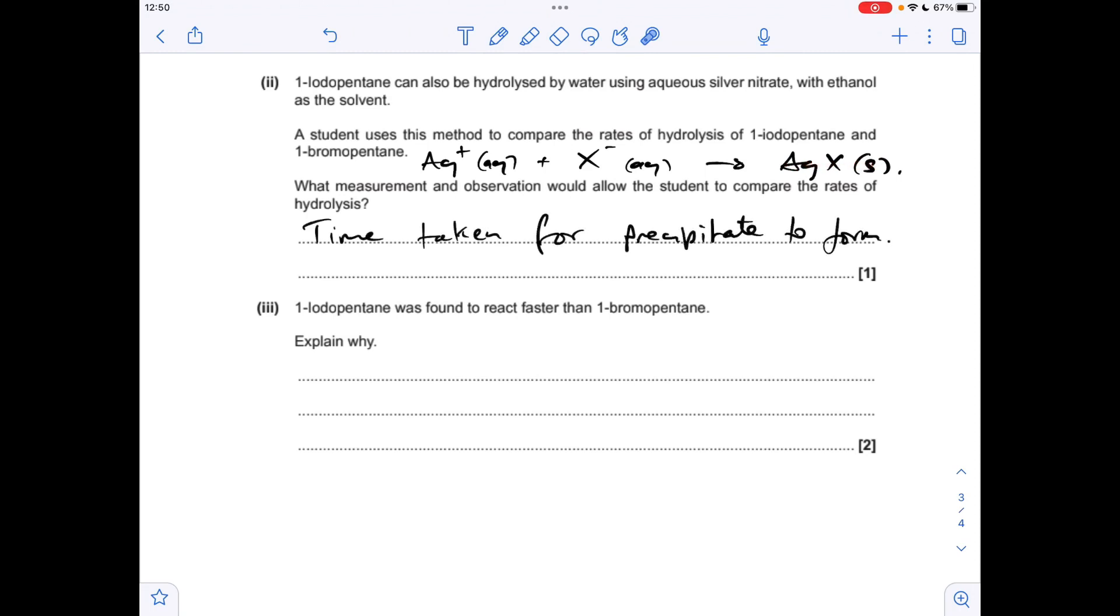So to compare the relative rates of hydrolysis, you'd measure the time taken for the precipitate to form. And the next part is all down to the relative bond strength of the carbon-halogen bond. So CI bond is weaker than the CBr bond, or you could say it has a lower bond enthalpy, and therefore the CI bond will break more easily than the CBr bond.